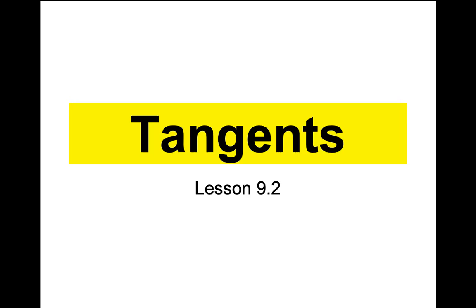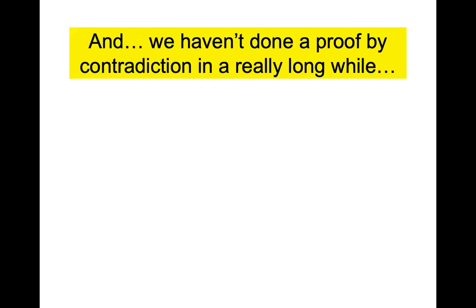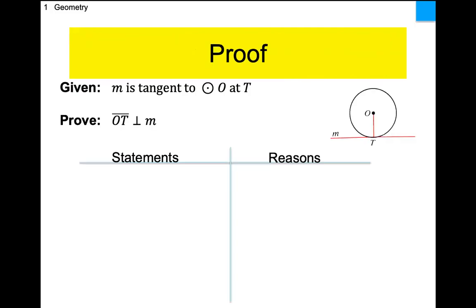We haven't done a proof in a while. We haven't done a proof by contradiction in a really long while — that's the first thing we're going to do. So here's my circle with a tangent. I have a circle, red line M, tangent. It says it's a tangent, and the point of tangency is at point T. I'm going to now prove that OT is perpendicular to line M. So if you have a circle and you have a tangent and you draw a radius to that point of tangency, it forms a right angle. That's what I'm about to prove.